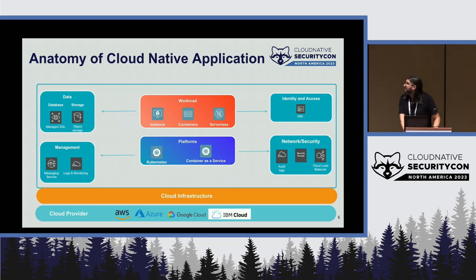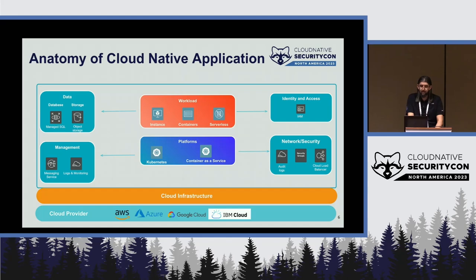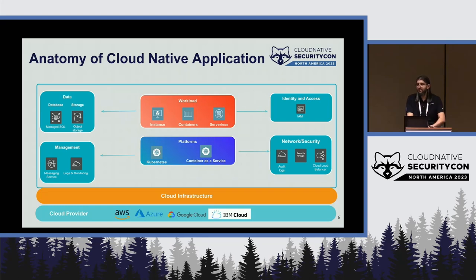Talking about cloud-native applications, we have the main business value — the workloads you're developing — including workloads migrated via VMs to cloud, containers, and serverless. This runs on top of platforms like Kubernetes, container-as-a-service, plus support services like data storage (buckets, databases), log monitoring, identity and access management, and network and security. So security here means securing the full ecosystem, not just your workload.